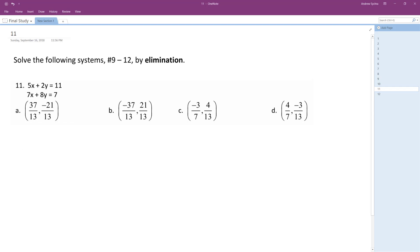So if I do that, multiply the top by negative 4, I get negative 20x minus 8y equals negative 44.